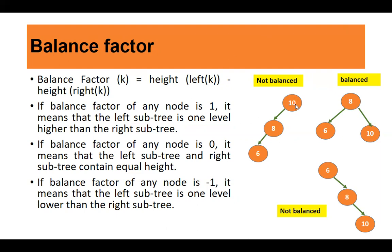Looking at a subtree example — it's a binary search tree, and the keys on the left side are all smaller than the root key. What is the balance factor of node 10? It has one and two nodes on its left subtree, so that's plus two, and the right side has nothing, so zero. Plus two minus zero gives a balance factor of two, which is not a valid balance factor — valid balance factors are one, zero, and minus one. So this tree is imbalanced. Now looking at node 8: height of its left subtree is one, height of its right subtree is one. So one minus one, the balance factor is zero — this tree is balanced.